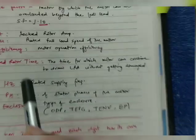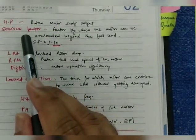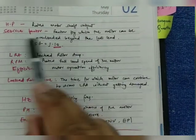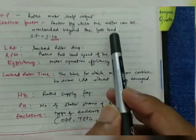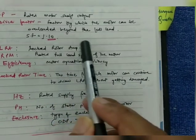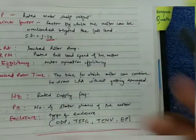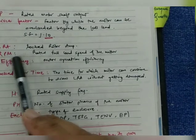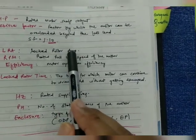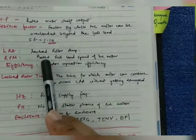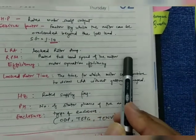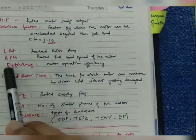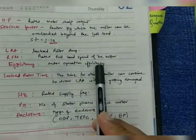Next is HP — how much horsepower is the rated motor shaft output. Service factor is the factor by which the motor can be overloaded at full load. LRA is locked rotor amps. RPM is the rated full load speed of the motor in revolutions per minute — the rotating speed. Then efficiency is the motor operating efficiency.